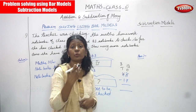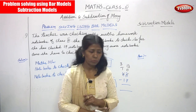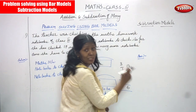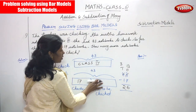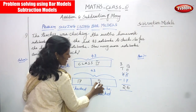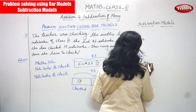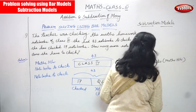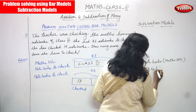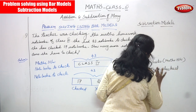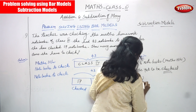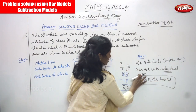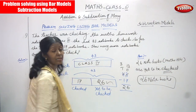13 is the bigger number and 7 is the smaller number. For 13 minus 7, we count backward from 7 up to 13: 8, 9, 10, 11, 12, 13 — that gives us 6. Then 3 minus 1 equals 2. So the answer is 26. There are 26 math homework notebooks yet to be checked by the teacher. 26 is the correct answer.